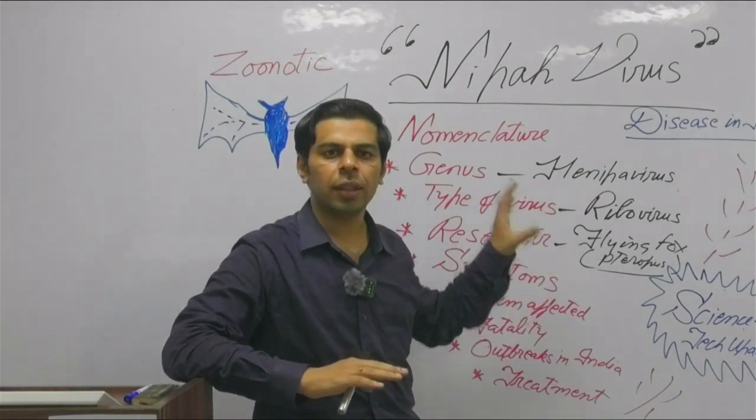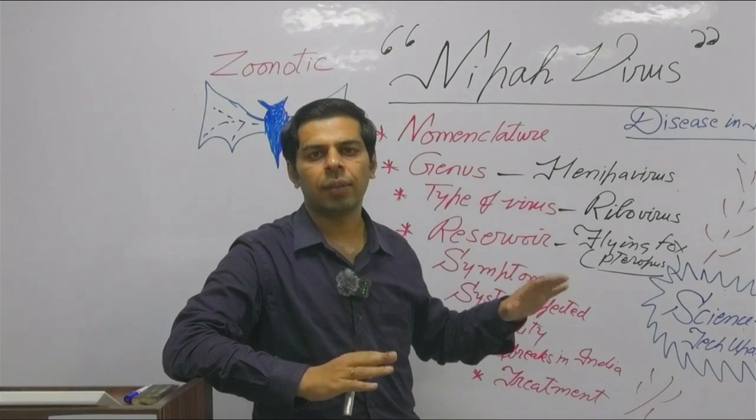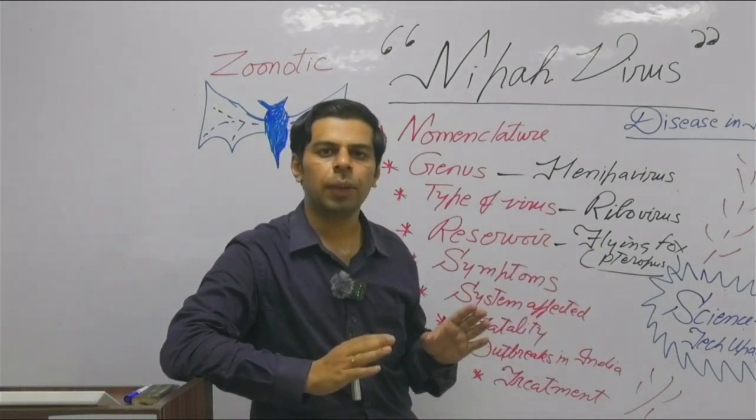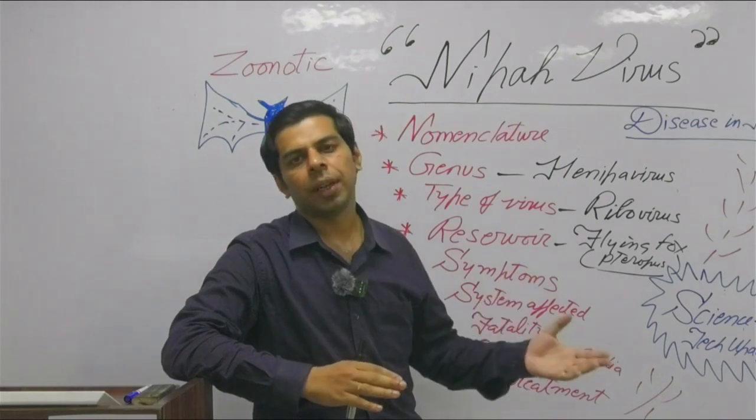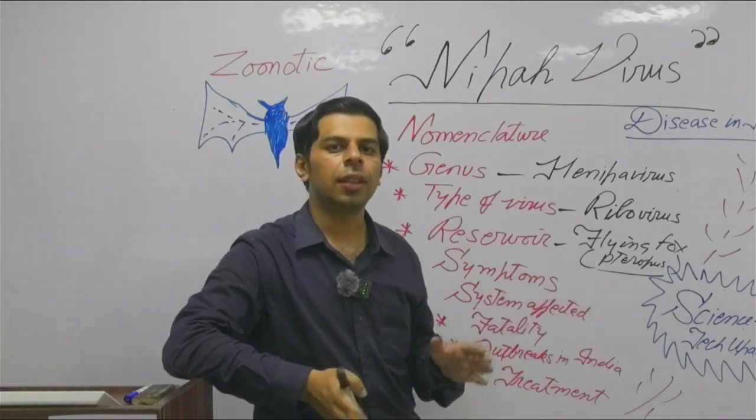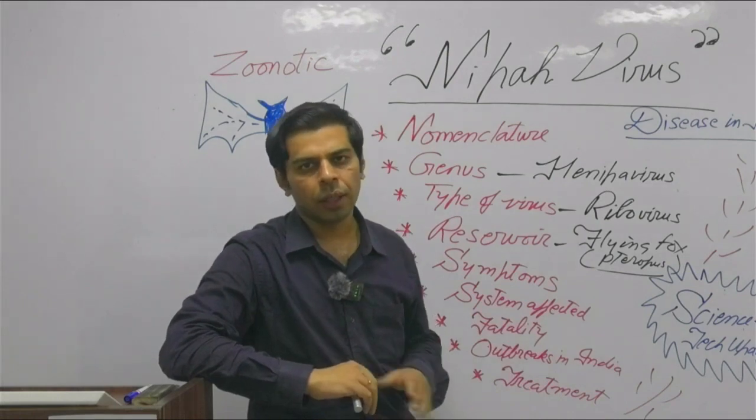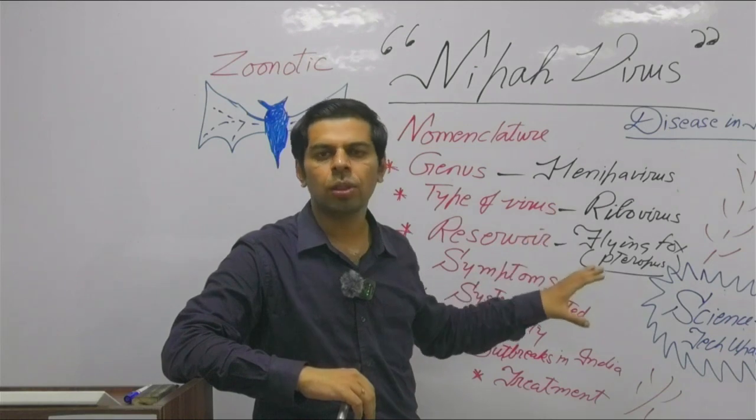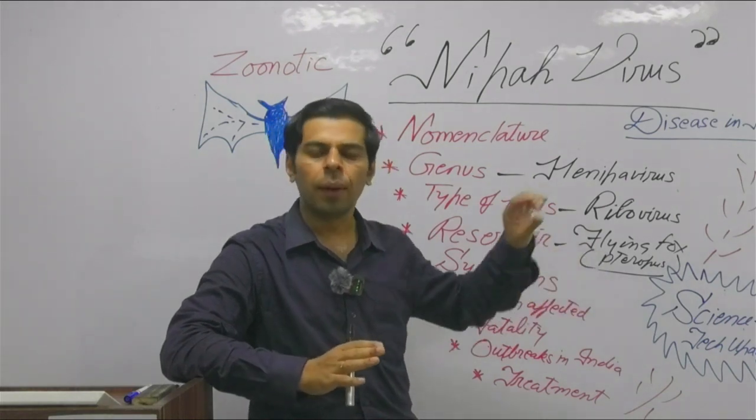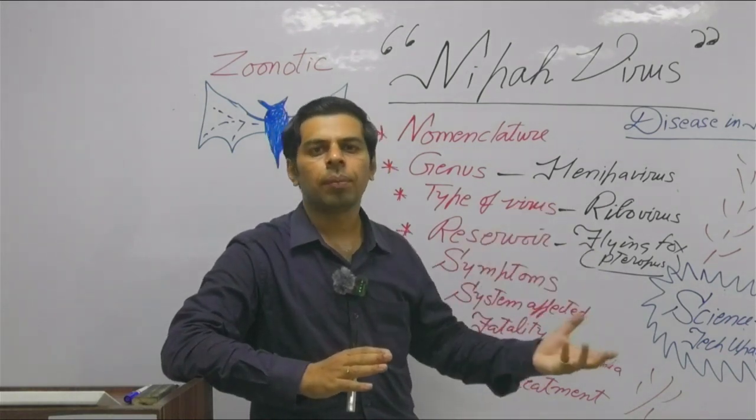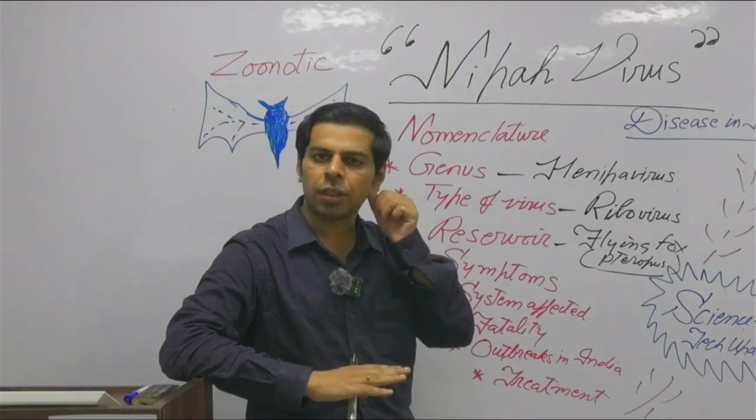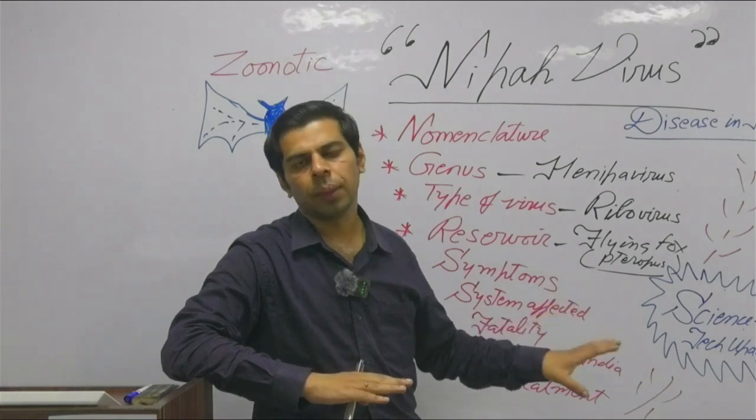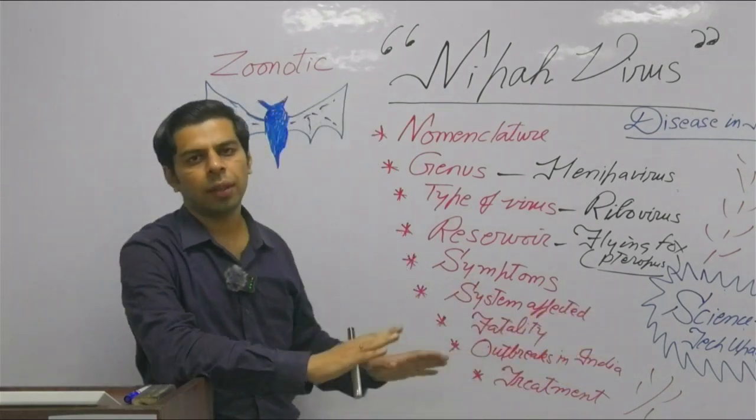That is why the disease in medical terms is described as acute encephalitis syndrome. Encephalitis in simple terms means inflammation of meninges or nerve membrane. In some cases it even results in fatality. The systems affected part - there is acute respiratory distress, so respiratory system is also involved, but the main system being affected or resulting in complication is the nervous system.